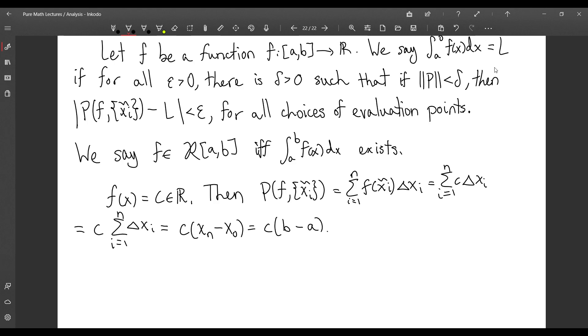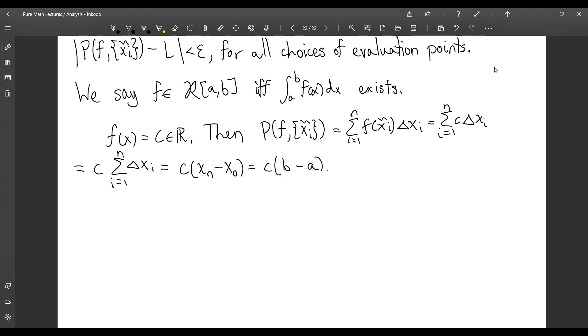Since this Riemann sum is always going to be this value, it's constant with respect to choice of partition, with respect to the mesh of the partition. Thus the integral from a to b of f(x)dx is c times (b - a).